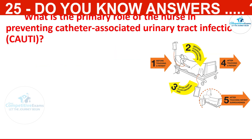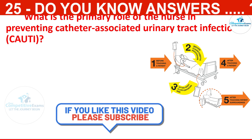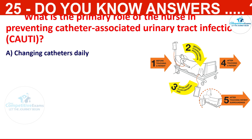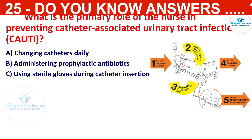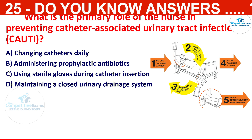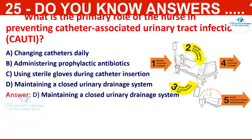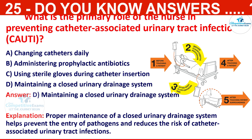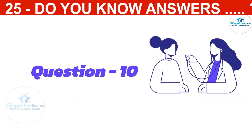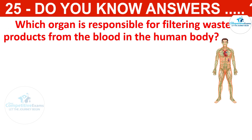What is the primary role of the nurse in preventing catheter-associated urinary tract infection (CAUTI)? The options are changing catheters daily, administering prophylactic antibiotics, using sterile gloves during catheter insertion, or maintaining a closed urinary drainage system. The correct answer is maintaining a closed urinary drainage system. Proper maintenance helps prevent the entry of pathogens and reduces the risk of catheter-associated urinary tract infections.